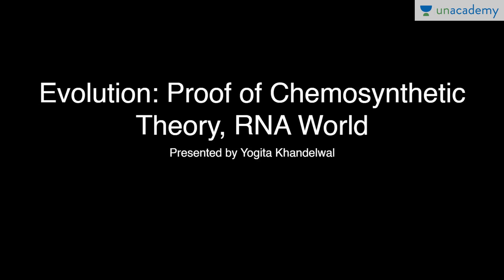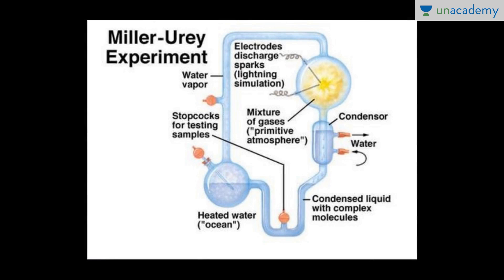In this lesson we will talk about proof of chemosynthetic theory and RNA world from the topic evolution. This is presented by Yogata Khandelwal. Miller-Urey experiment. In our previous lesson we talked about chemical evolution or chemogeny, and Miller and Urey proved the theory of chemical evolution.